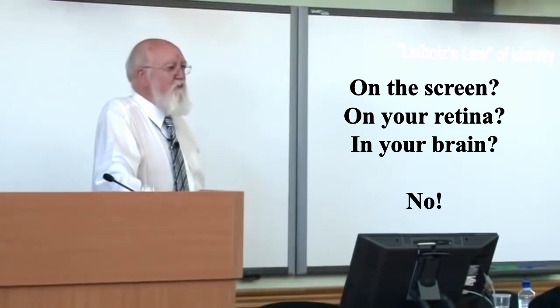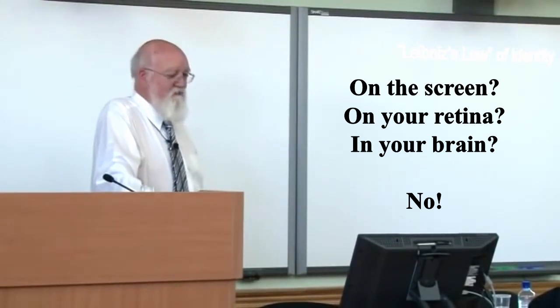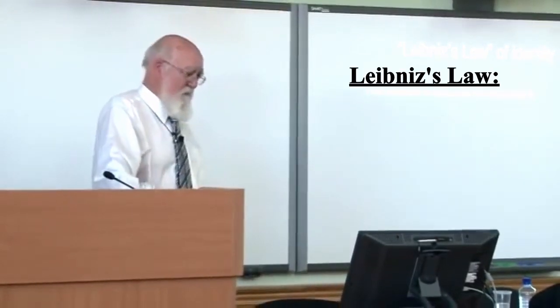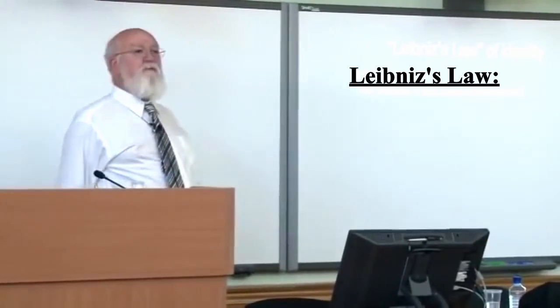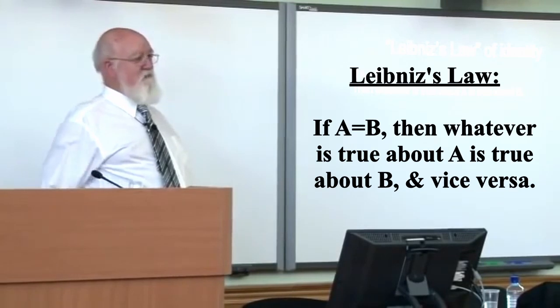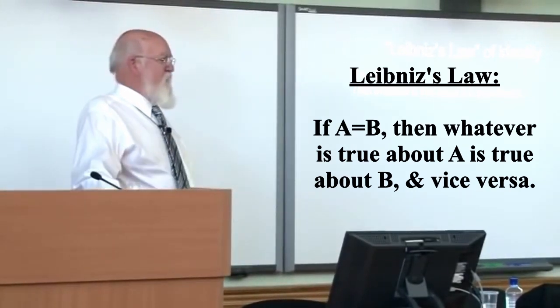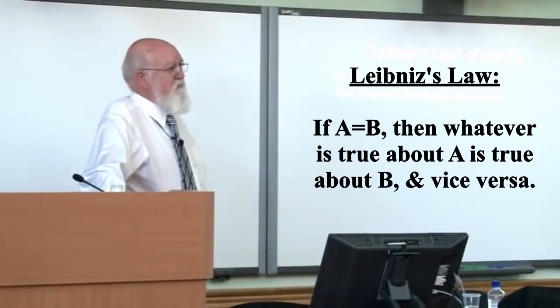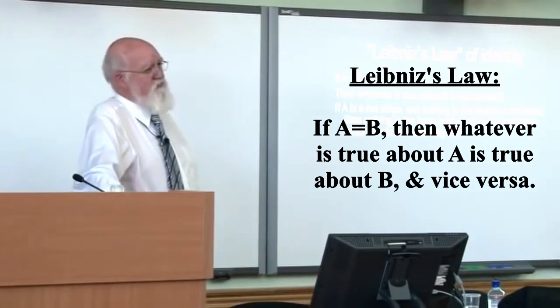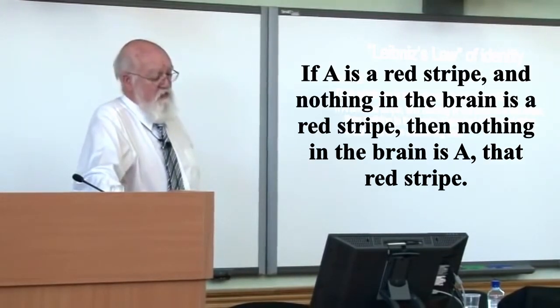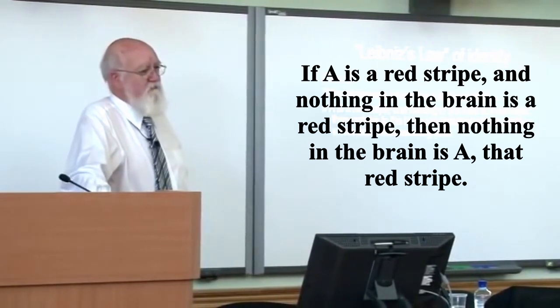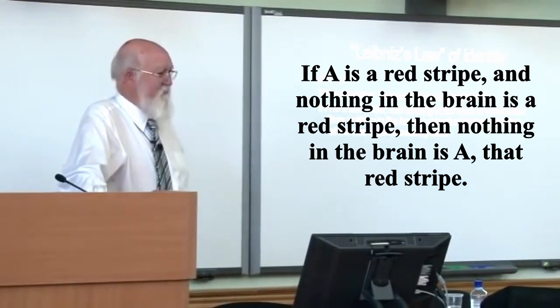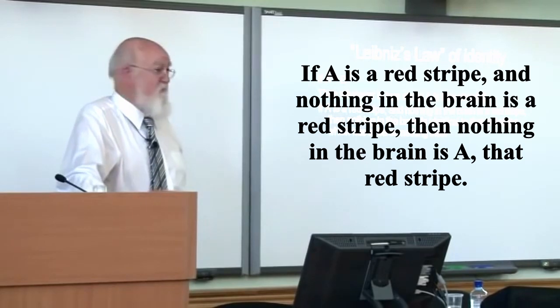Now, Leibniz's very simple and uncontroversial law of identity says that if A is identical with B, then whatever is true about A is true about B and vice versa. Very simple principle, but it makes a difference here because it means that if A is a red stripe and nothing in the brain is a red stripe, then nothing in the brain is identical to that red stripe, which, if it's real, has to be something else.